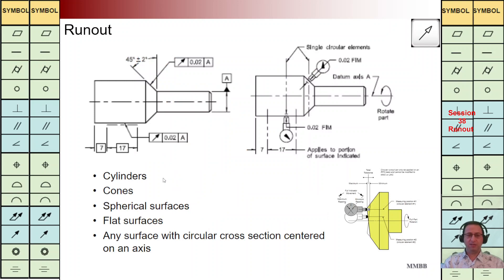We can implement this run out for any surface with a circular cross section, the same as cylinders, cones, or spherical surfaces. We can also implement it for flat surfaces, but we are not going to use any modifiers such as LMC or MMC.